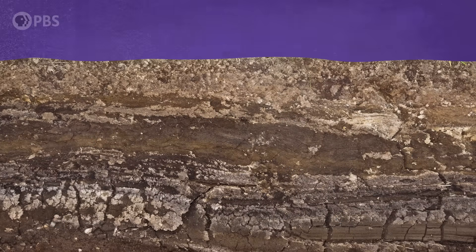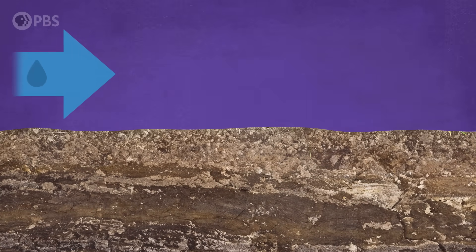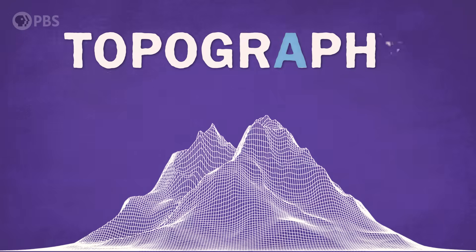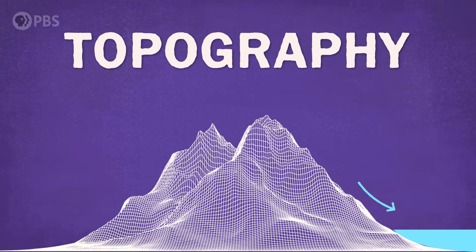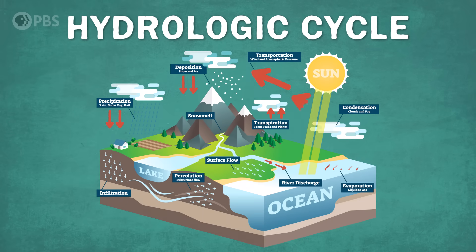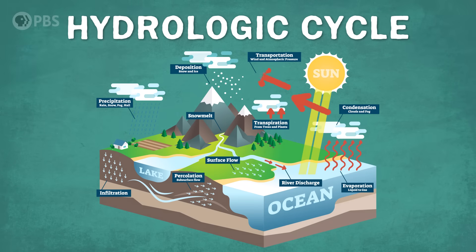Or instead of going down into the soil, it could move across the land in a process called runoff. The runoff, with the help of topography and gravity, will eventually take it to another body of water, like a lake or river. Or instead of becoming groundwater, runoff, or staying on the surface, that water drop could be evaporated back into the air by the Sun's heat. From surface water to air and back again is the primary loop of the hydrologic cycle, but there are a lot of potential detours along the way.